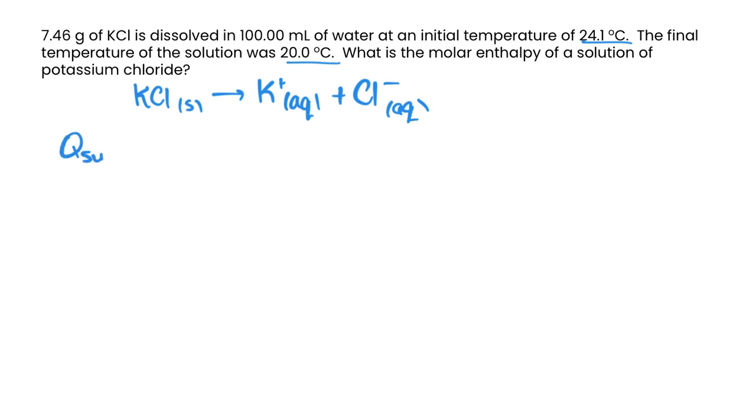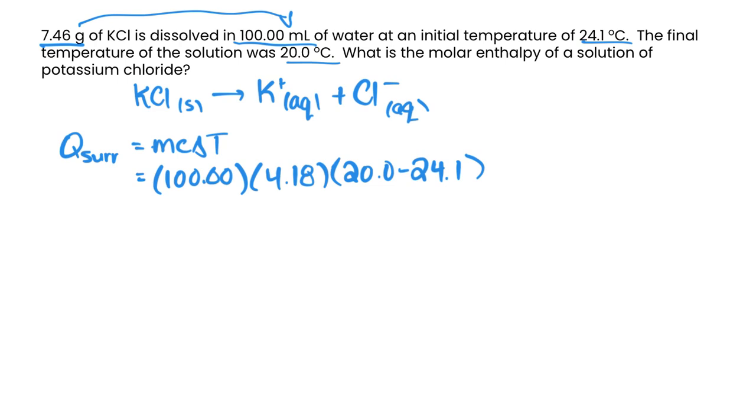So let's start with q of our surroundings is equal to mc delta T. Now here we're assuming that taking the 7.46 grams of KCl and dissolving it in water is not really changing the volume very much, or at all. So we're just going to use the volume of water, which is 100 mL. And we're assuming it has the same density of water, so we're assuming it's 100 grams. We're going to use the specific heat capacity of water, because again we're making that assumption. And then we've got our delta T. So we got 20.0 minus 24.1. Because the temperature is going down, we know that this should be endothermic. So we should get a delta H that is a positive value at the end of this. So something to keep in mind.